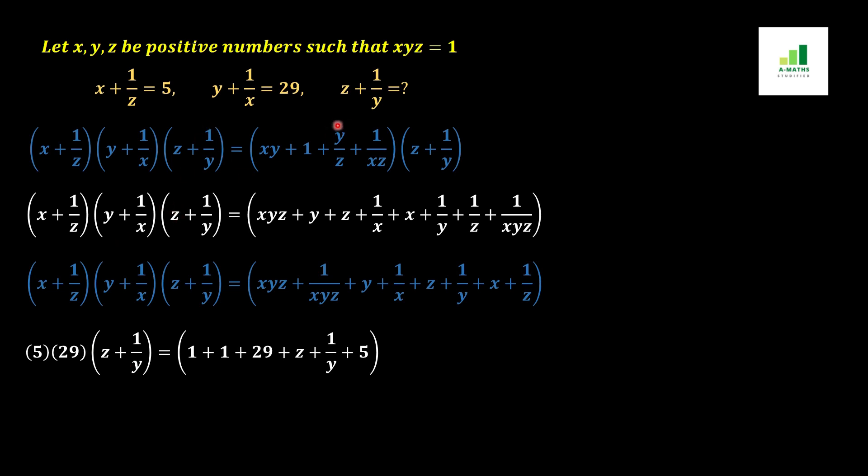Now, z + 1/y is the required value and xyz = 1. So, we insert xyz value equal to 1 at these places. y + 1/x = 29, z + 1/y is the required value, and x + 1/z = 5.